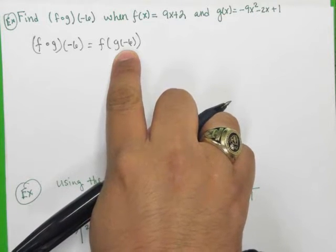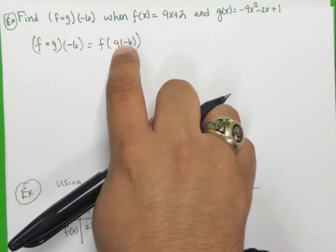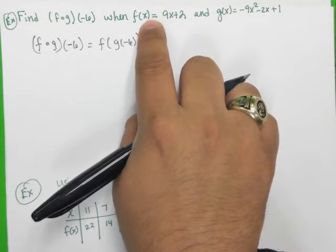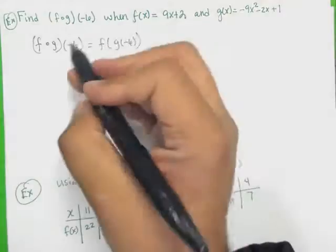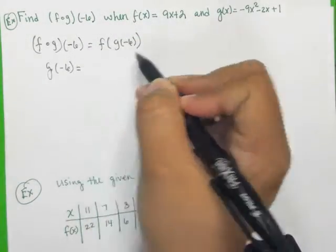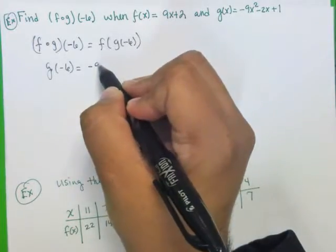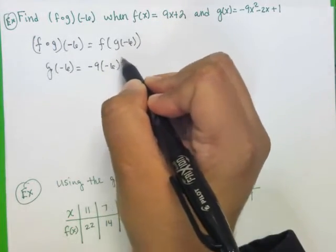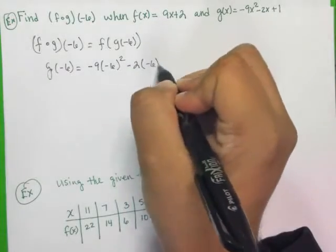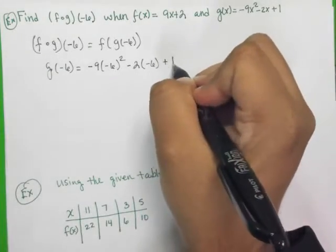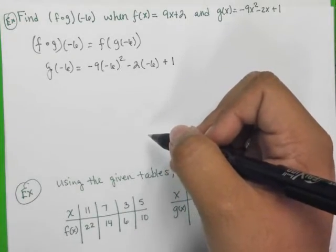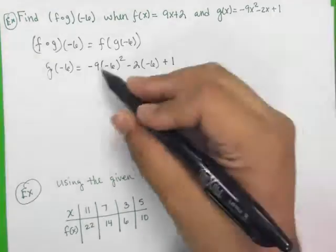And once we get this number, whatever this number may be, we're going to plug it in here into F. So let's go ahead and do that. So let's see here. G of negative 6. Let's figure that one out first. Negative 9 times negative 6 squared minus 2 times negative 6 plus 1. Okay, so we plug that in right there. And I'll give you a chance to do that.